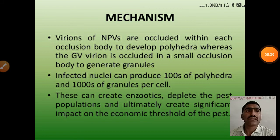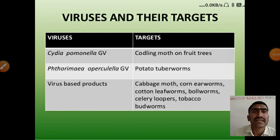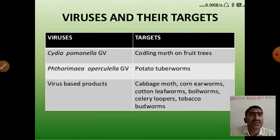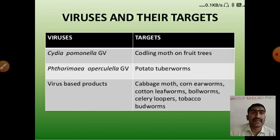Let's see viruses and their targets. Cydia pomonella GV virus targets the codling moth on fruit trees. Phthorimaea operculella GV targets the potato tuber worm. Other virus-based products target the cabbage moth, corn armworms, cotton leaf worms, bollworms, celery loopers, and tobacco budworms. These are some examples of viruses and their targets used as viral biopesticides.